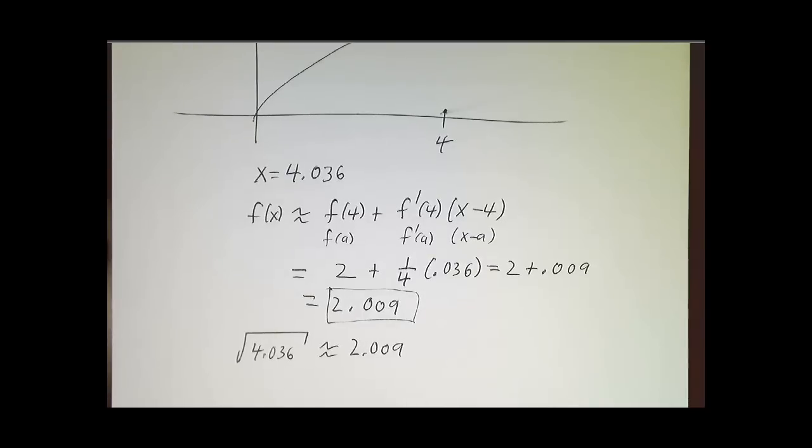Now if you pull out a calculator and compute the square root of 4.036, what you'll get is 2.00898. I think that's pretty close to 2.009, good enough for us.